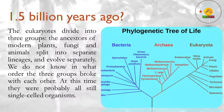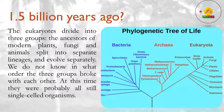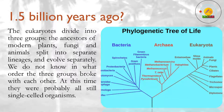1.5 billion years ago? The eukaryotes divide into three groups — the ancestors of modern plants, fungi and animals split into separate lineages and evolve separately. We do not know in what order the three groups broke with each other. At this time they were probably all still single-celled organisms.